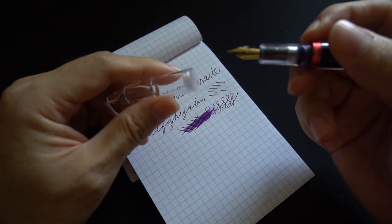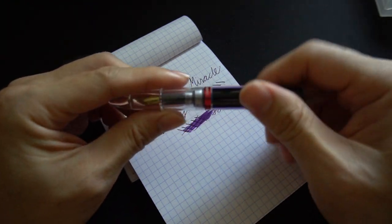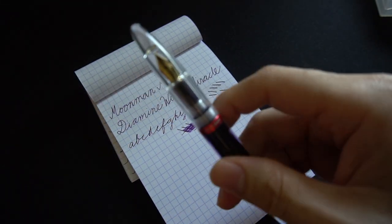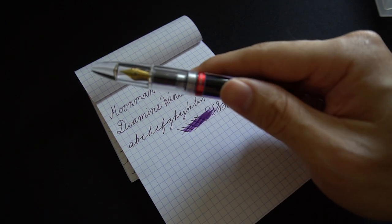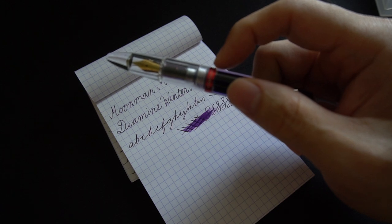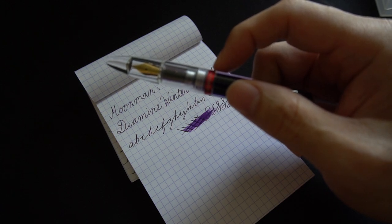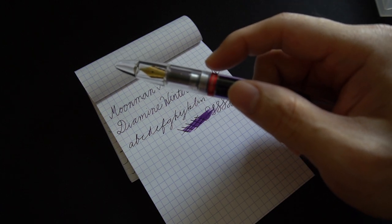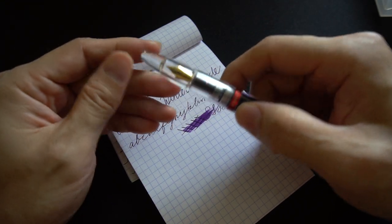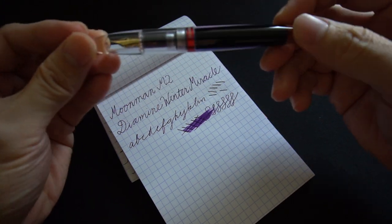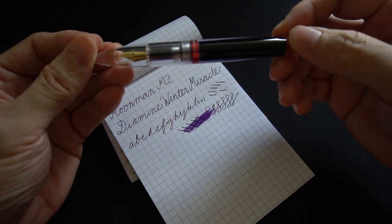Basically lots of ink flow. So that's one thing which I normally notice about Moonman pens - they have this little bit of out-of-the-box unfinished feel about it for their nibs, and then you have to do a little bit of prep. But after you do the prep, you get a pretty good writing pen.